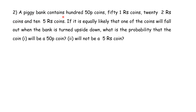Next problem: A piggy bank contains 100 fifty-paise coins, 50 one-rupee coins, 20 two-rupee coins, and 10 five-rupee coins. If it is equally likely that one of the coins will fall out when the bank is turned upside down, what is the probability that the coin will be a fifty-paise coin, and what is the probability it will not be a five-rupee coin?